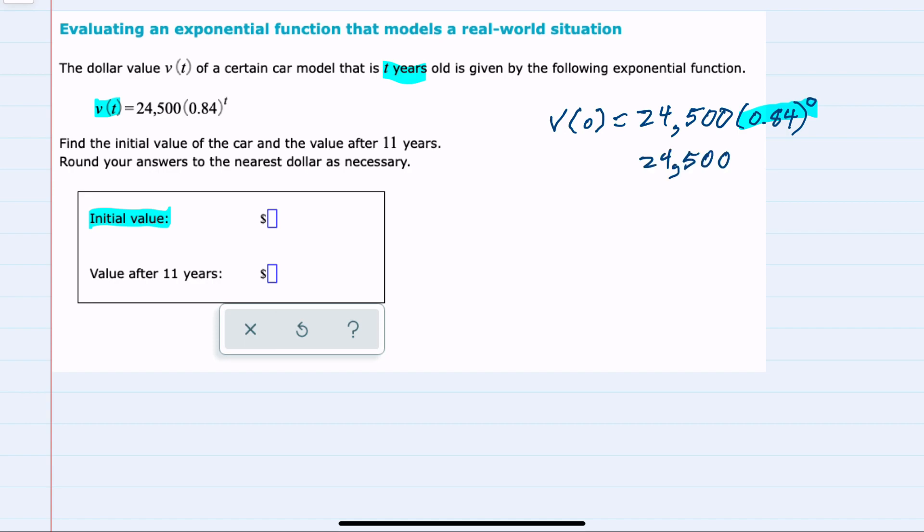And we know that when we raise a non-zero number to the 0 power, we always get 1, so 24,500 times 1 is 24,500. So that would be our initial value for the vehicle.